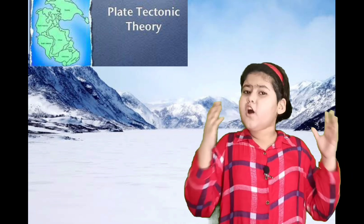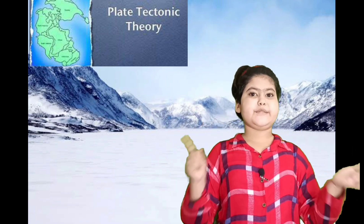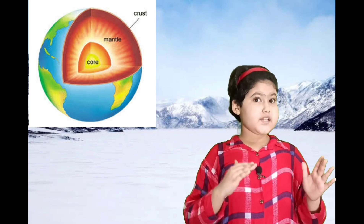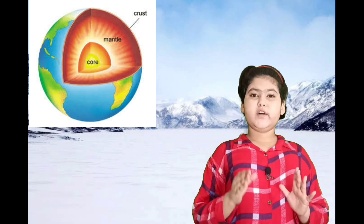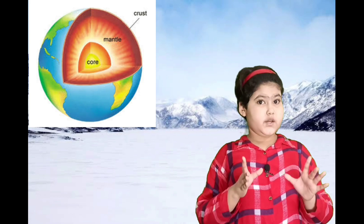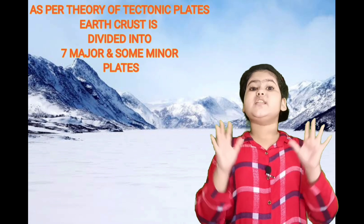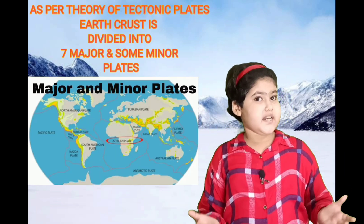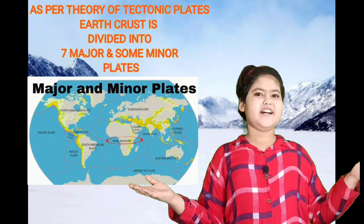As we all know, our Earth consists of three layers: crust, mantle, and core — crust at the top, mantle in between, and core at the bottom. According to Tectonic Plates Theory, the crust is divided into seven major plates and some minor plates, such as the Indo-Australian plate, African plate, and others.